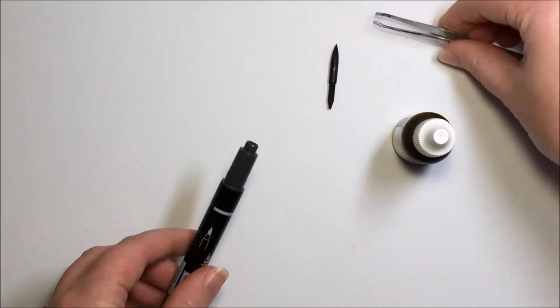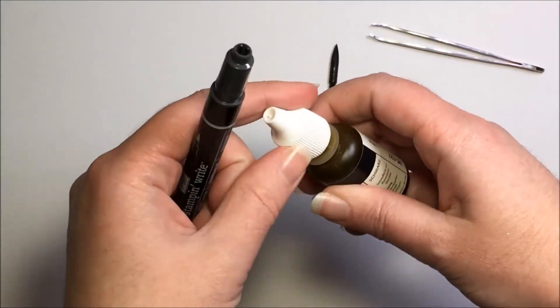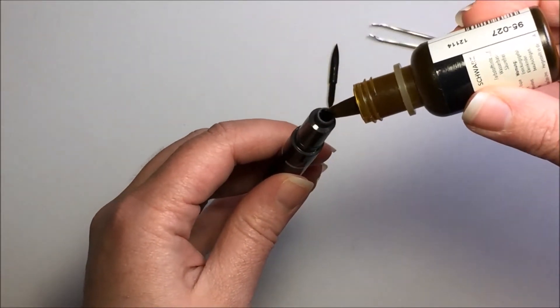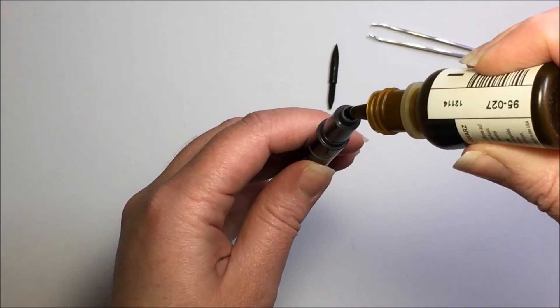You can set that aside and now I'm going to take some of our ink in our re-inkers. There's one in every color and I'm just going to add a couple of drops right into the barrel of the marker.